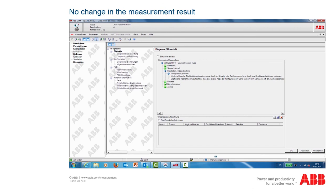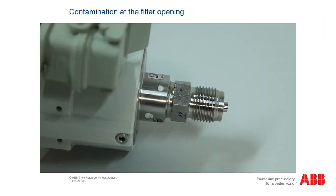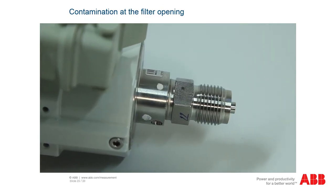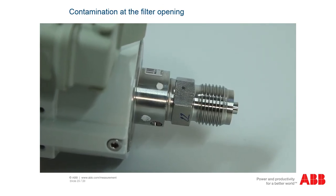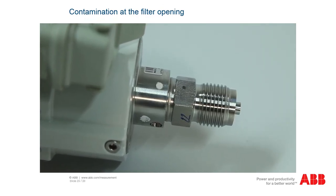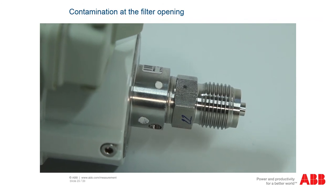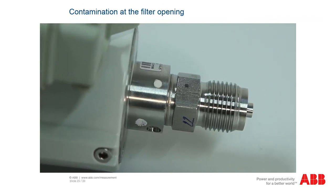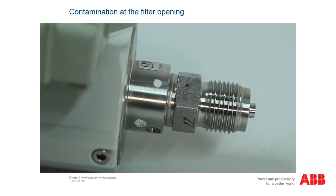Instead, a note appears informing you that the configuration was imported again as a result of the electronics being replaced. If a correct measurement of the pressure transmitter is no longer possible, the cause may be a blocked filter opening. Remove the process pipe and then check and clean the filter opening of the pressure transmitter.